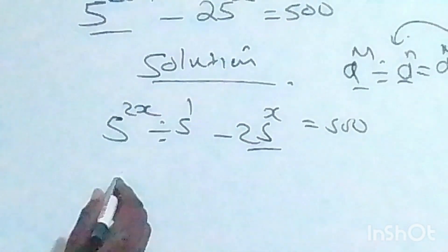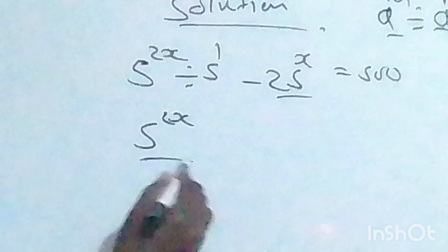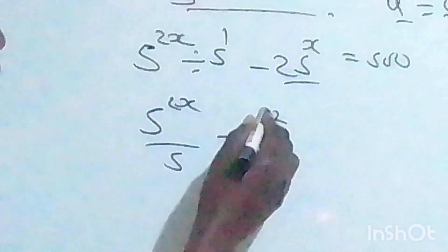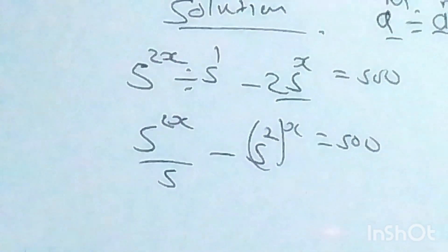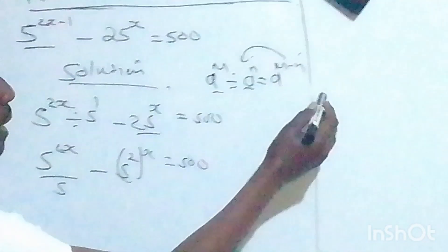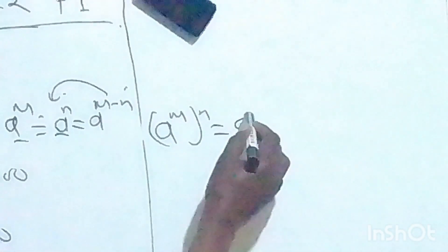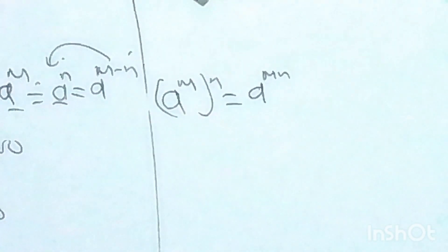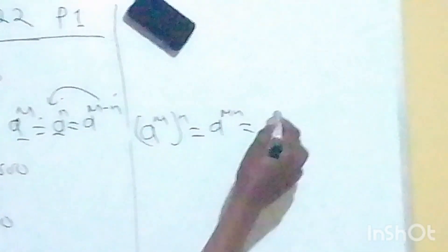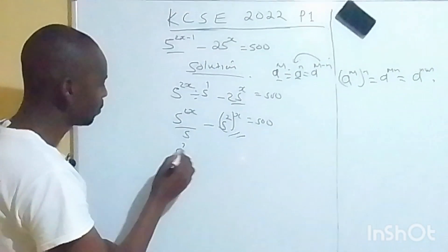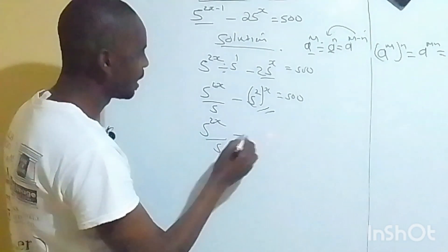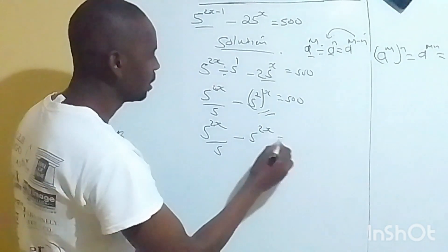So we have 5^(2x) over 5, minus 5^(2x), is equal to 500. Also, from the third law of indices, we know that a raised to m times m is the same as a raised to m squared. So applying that here, we have 5^(2x) divided by 5, minus 5^(2x), gives us 500.